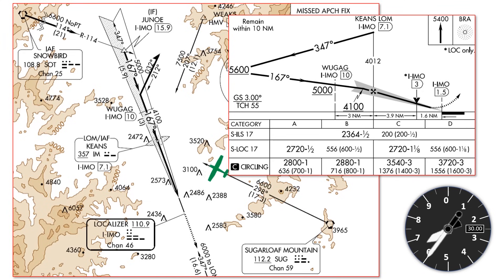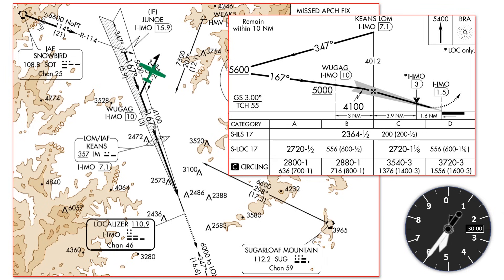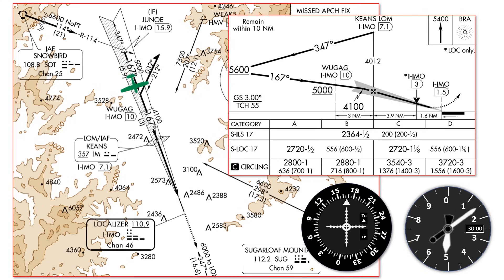We have to make our descents only when established. So we'll get to the NDB and fly outbound, descending when established on the outbound course to 5,600 — the procedure turn altitude. We'll execute the procedure turn, staying at 5,600 until established on the localizer. We'll use full deflection, but remember the ACS gives a guideline of three-quarter scale, and ICAO has a half scale.